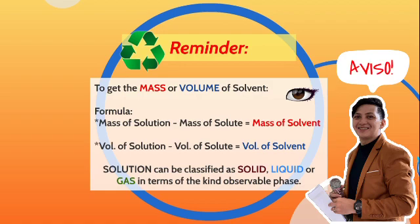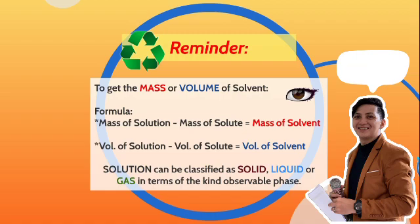Reminder: to get the mass or volume of the solvent, use these formulas. Number one: mass of solution minus mass of solute equals mass of solvent. Number two: volume of solution minus volume of solute equals volume of solvent. Solution can be classified as solid, liquid, or gas in terms of the kind of observable phase.